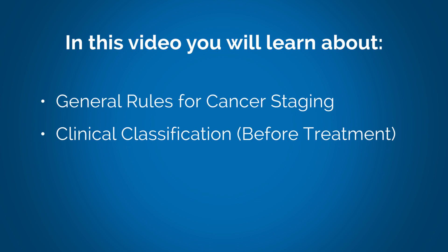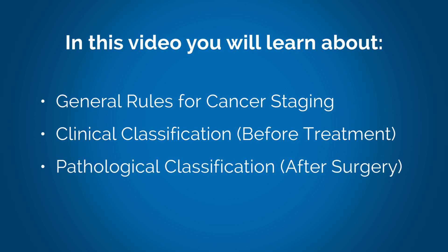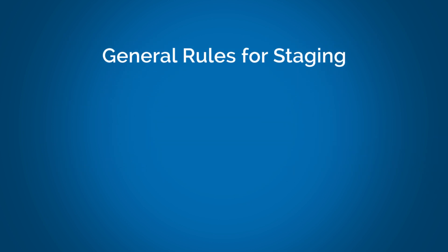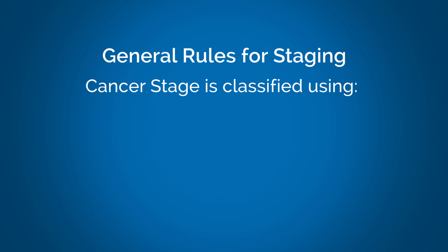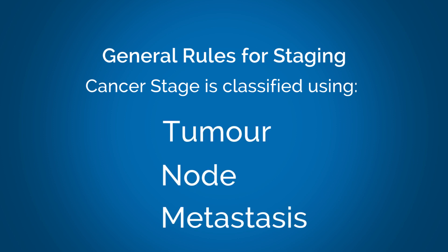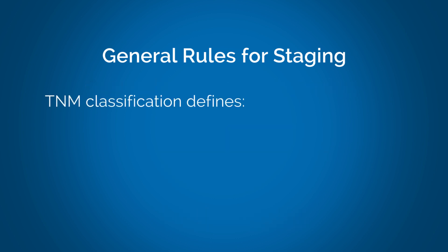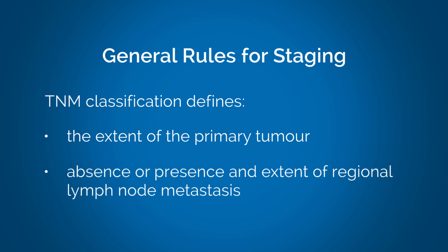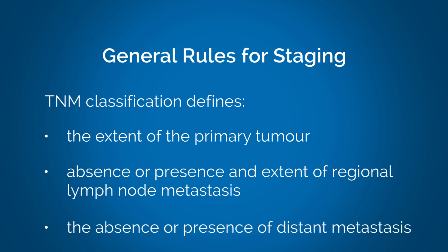Tumors are classified both before treatment, known as clinical classification, and after surgical treatment, known as pathological classification. Cancer stage is classified using the tumor node metastases system, known as TNM. TNM classification defines the extent of the primary tumor, the absence or presence and extent of regional lymph node metastases, and the absence or presence of distant metastases.